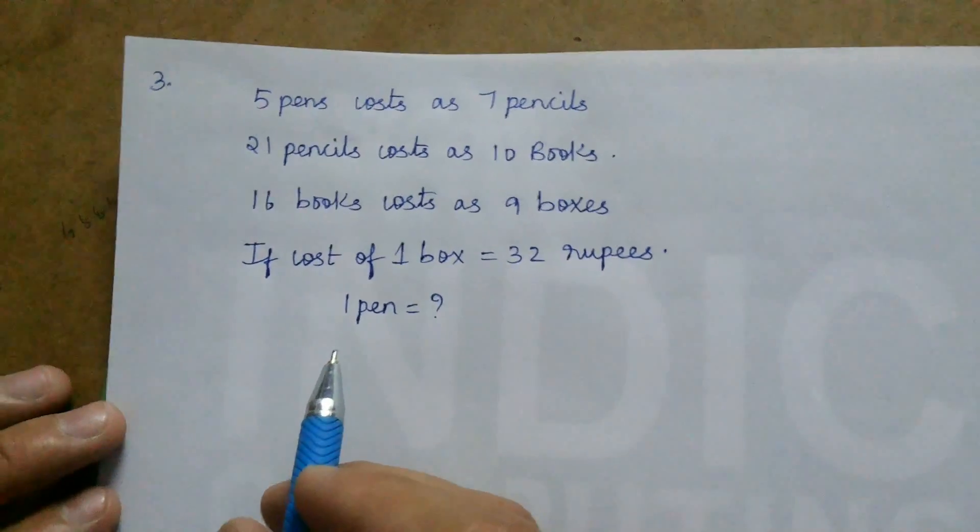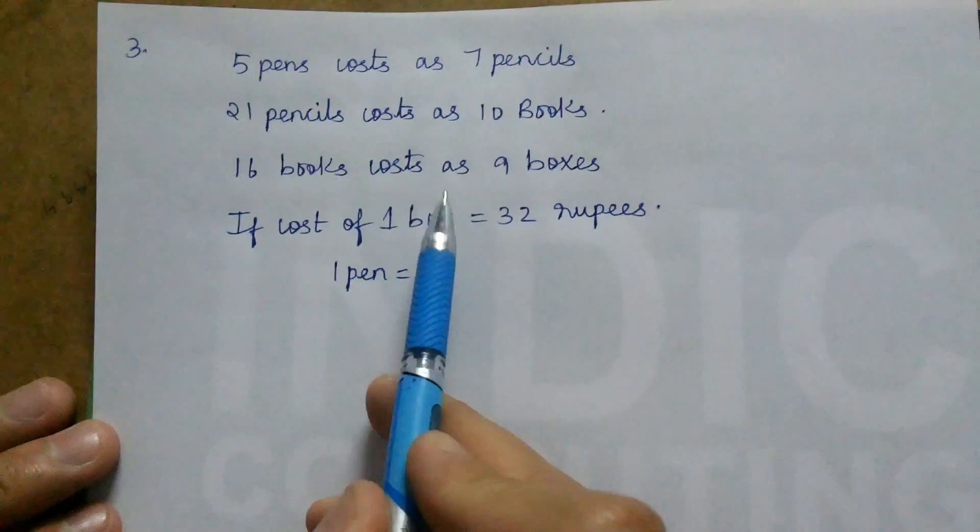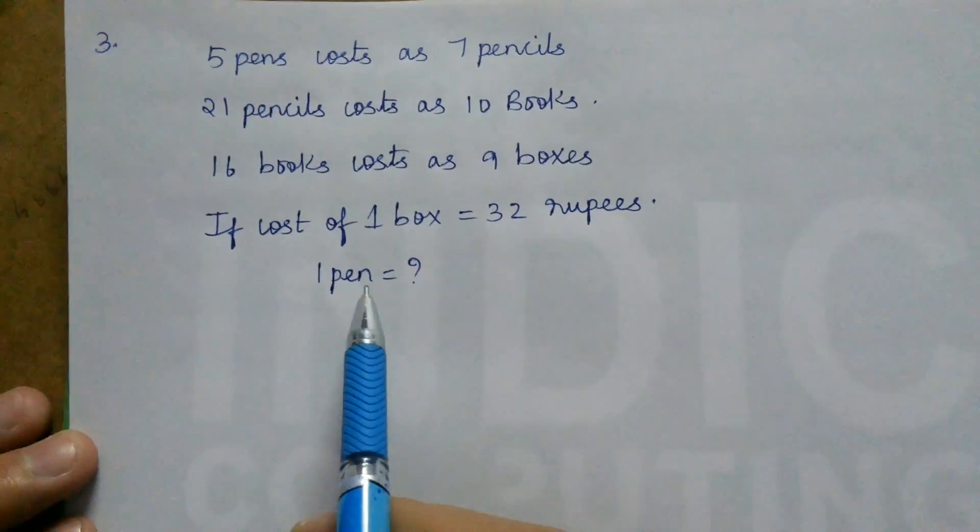5 pens cost as 7 pencils. 21 pencils cost as 10 books. 16 books cost as 9 boxes. If the cost of 1 box is 32 rupees then find the cost of 1 pen.